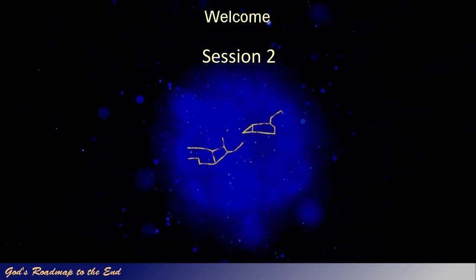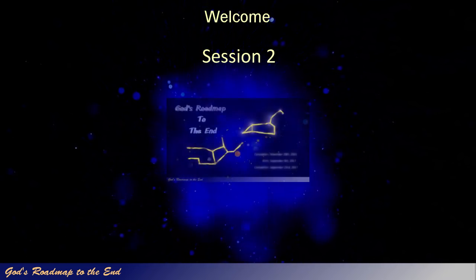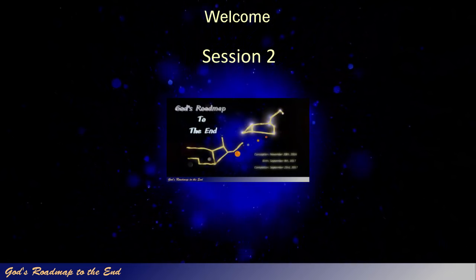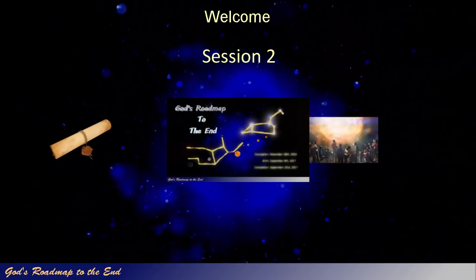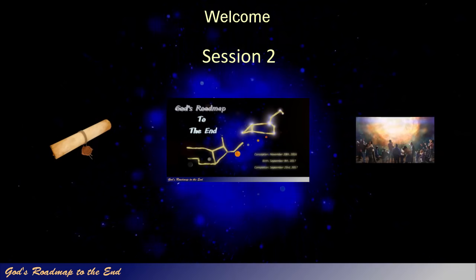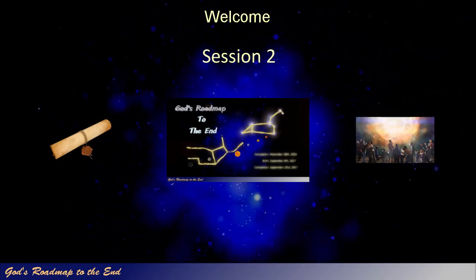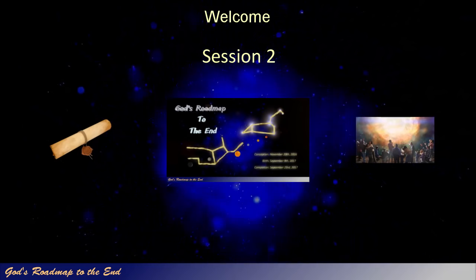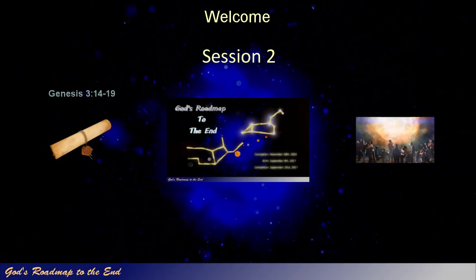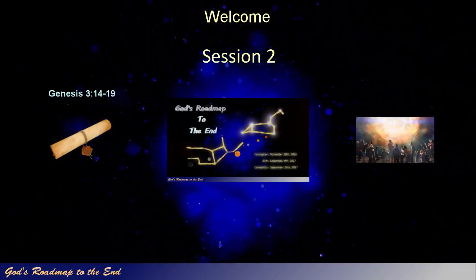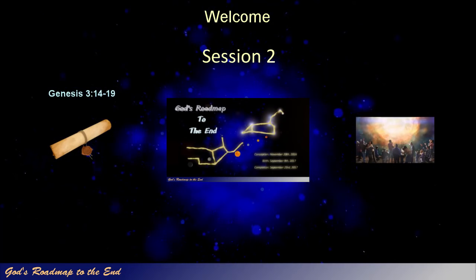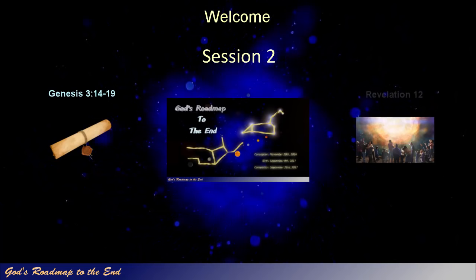If you watched the previous video, in which we discovered how God revealed to us the identity of the prophecy and the vision that Daniel was told to seal up, you will remember that the specific prophecy is found in Genesis 3 verse 14-19, and the specific vision was given to John in Revelation 12.